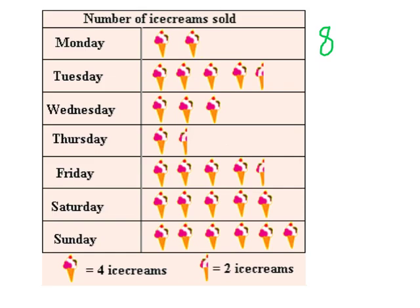For Tuesday, we need to count by fours: four, eight, twelve, sixteen, and this is two more. So 16 plus two is equal to 18 ice creams sold on Tuesday. Wednesday, we can do four times three, which is equal to 12. Thursday, we have four plus two is equal to six.